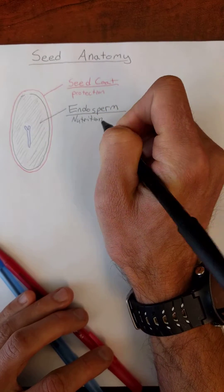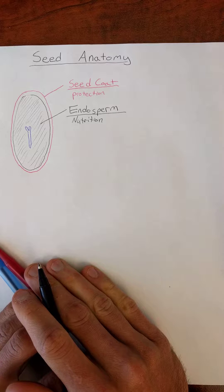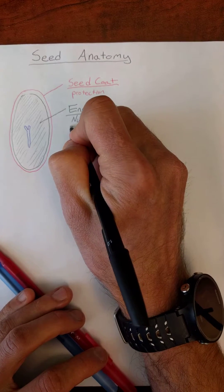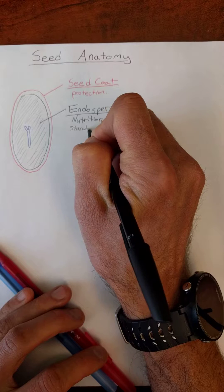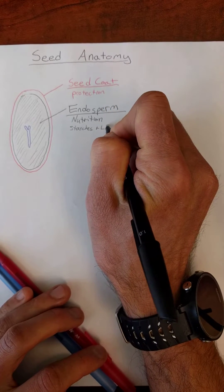That is for nutrition. Depending on the type of seed, this may be a lot of starches, or it might even be lipids. Starches and lipids.